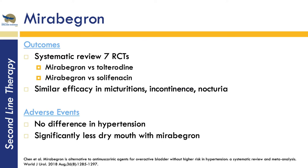Mirabegron, the beta-3 agonist, has been around long enough that there are a couple of RCTs comparing it to placebo as well as to anti-muscarinics. It has similar efficacy in managing symptoms — number of incontinence episodes, frequency, urgency, and nocturia. Because of its mechanism of action as a beta-3 agonist, there was concern it could cause hypertension, but studies showed no difference in hypertensive events compared to placebo or other muscarinics. Notably, there was significantly less dry mouth with mirabegron compared to anti-muscarinics, making it a good option for patients with side effects or in older populations.